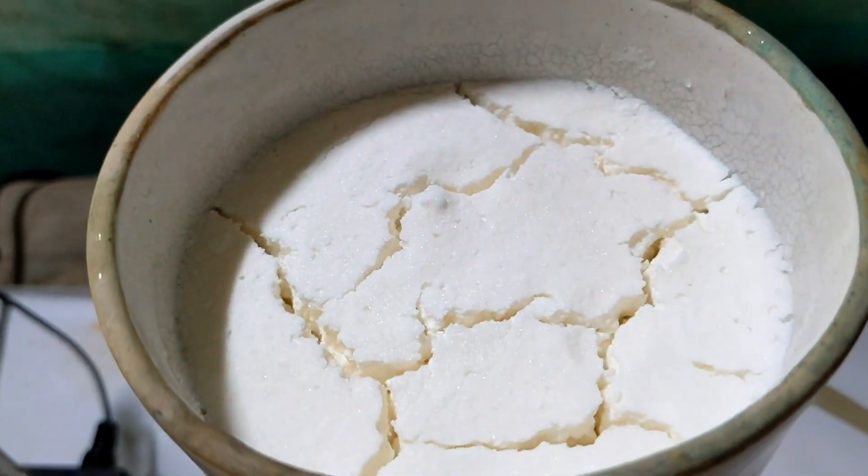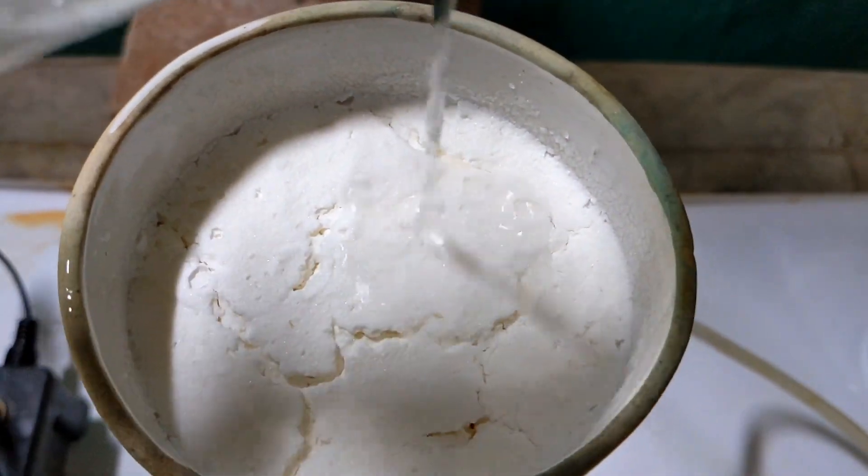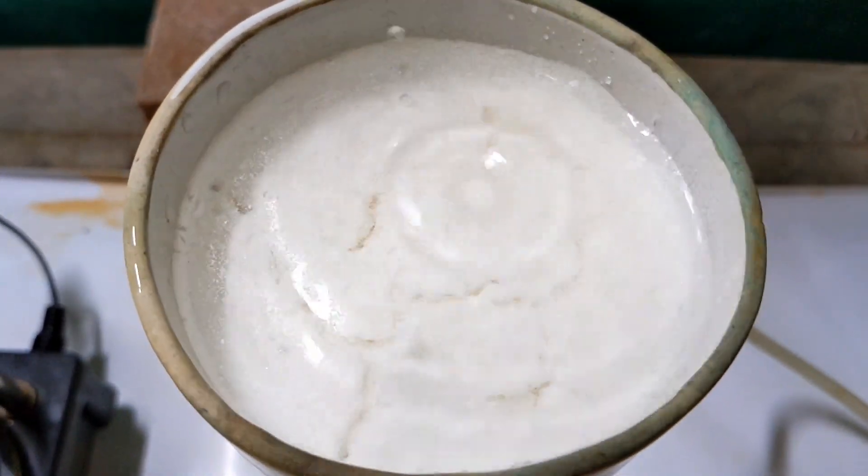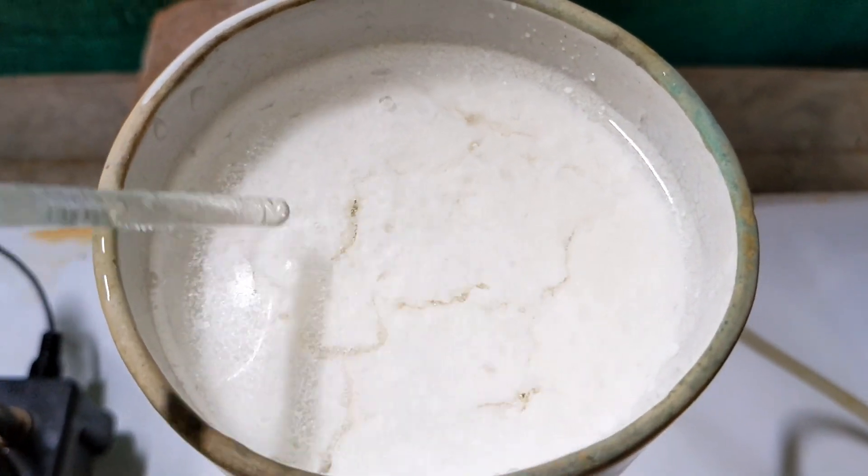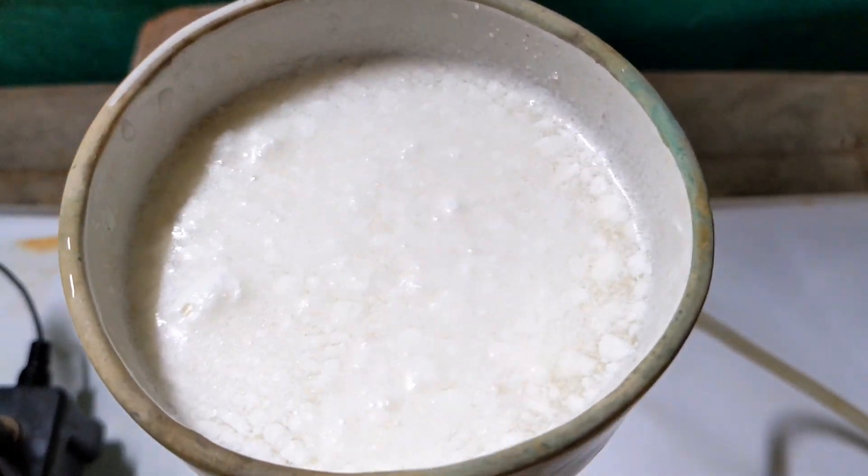Now we will be purifying the benzoic acid crude product by recrystallizing it from hot boiling water. Before going to the recrystallization part, I washed the crude benzoic acid a couple of times with distilled water to remove the excess acid present.